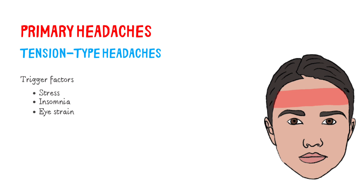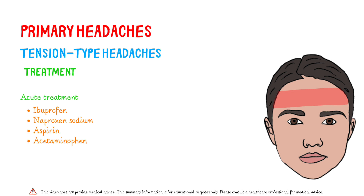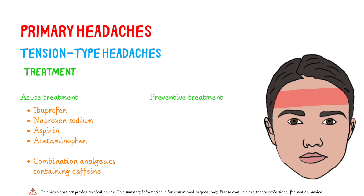Migraine and tension headache symptoms can overlap and it is difficult to distinguish between the conditions. Simple analgesics and non-steroidal anti-inflammatory drugs are the first choices for acute treatment. Caffeine-containing combination analgesics are a second-line option. Precautions should be taken to avoid headaches due to excessive drug use. Opioids and skeletal muscle relaxants are not usually used to treat tension-type headache. Prophylactic treatment is considered if acute treatments are ineffective or if the patient has chronic tension headache. We should consider non-pharmacological treatment for all patients.